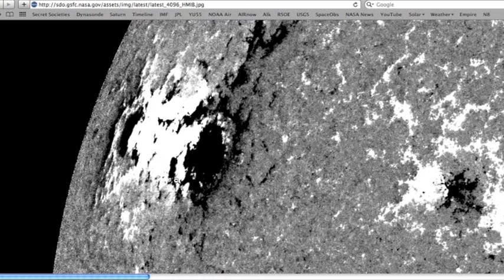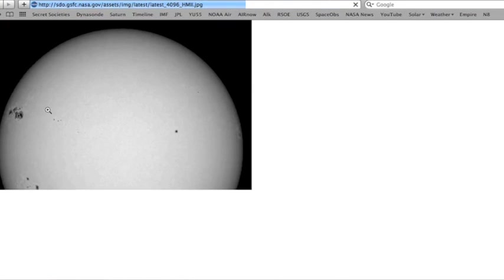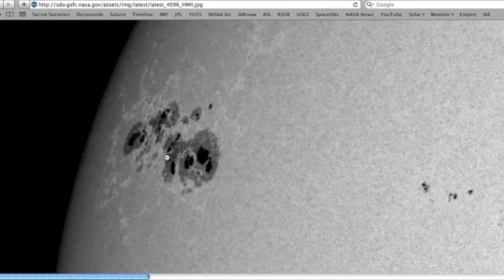So this is a beta gamma and it is capable of producing M and potentially even X class flares. Here's why: all the things that we're going to list right now are indicators that it could produce a significant flare CME.